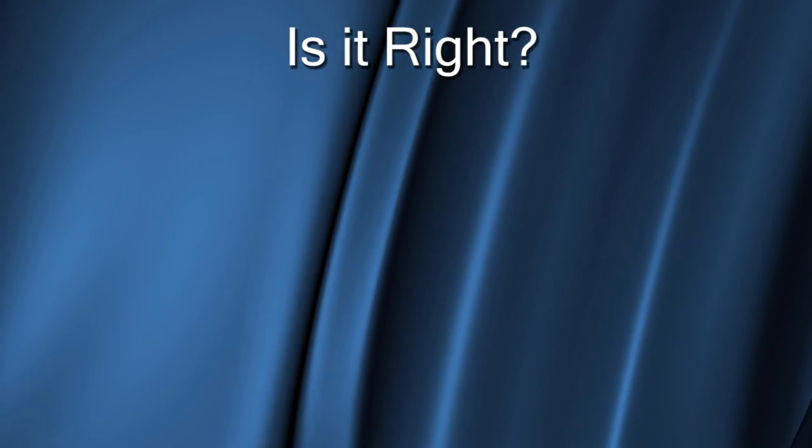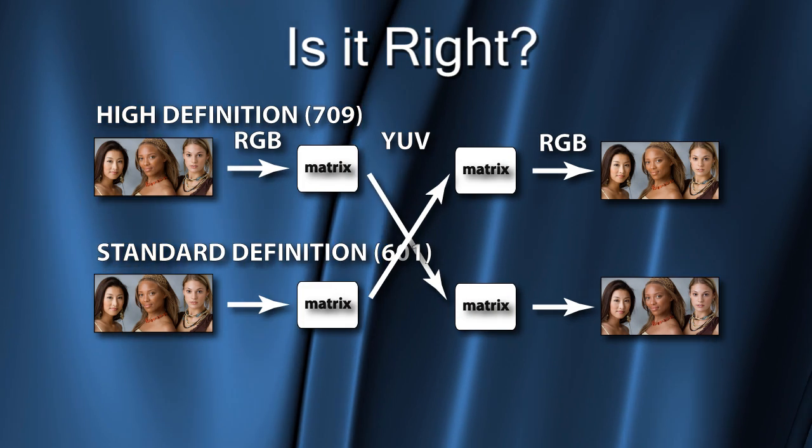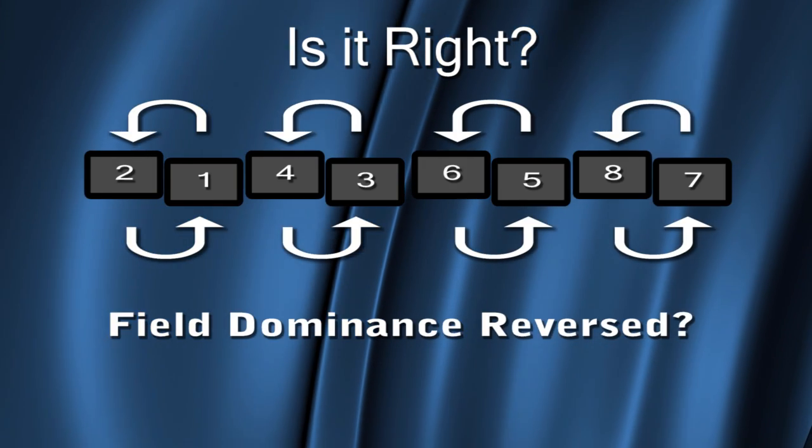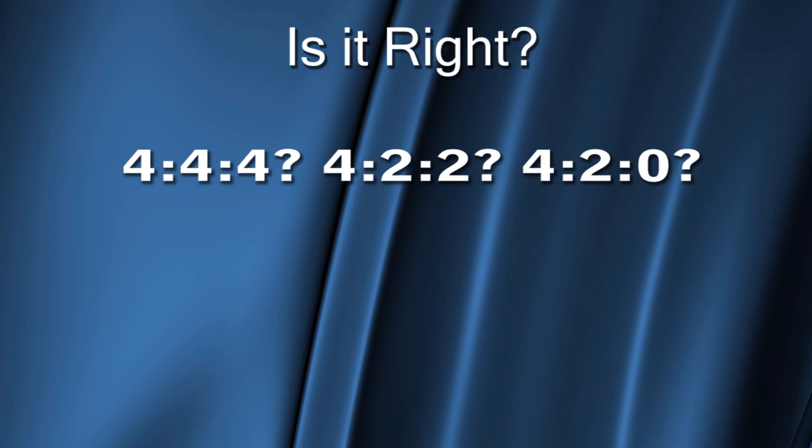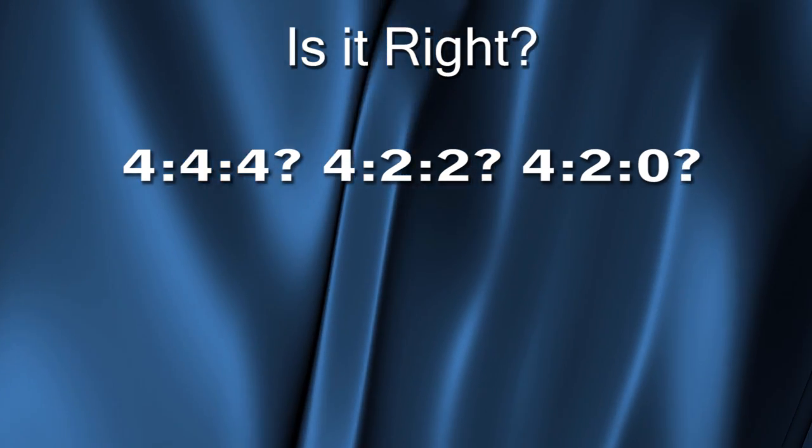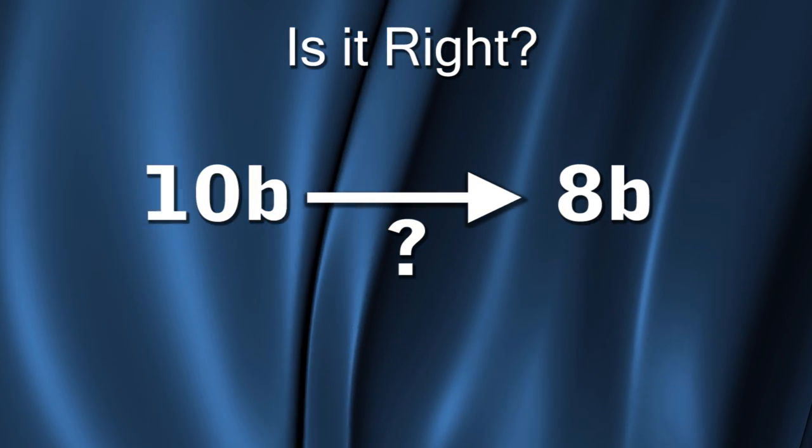So with digital video, the question is usually not how much, but is it right? Was the right color matrix used? Is the field dominance correct? Is it 444 or 422 or 420? Did my 10-bit video get truncated down to 8 bits?